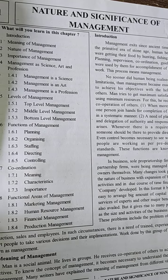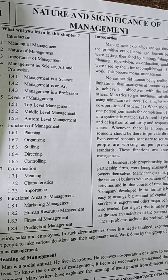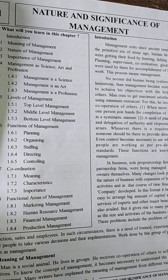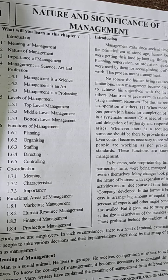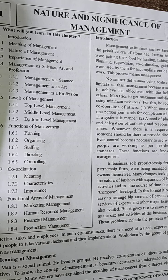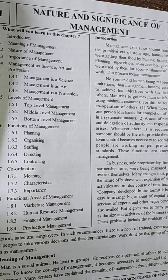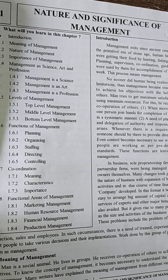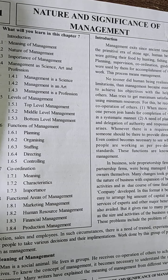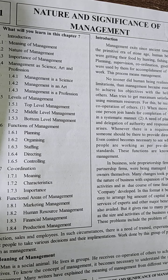But here we are going to study about business management. Last year I taught you there are various types of business forms — sole proprietorship, partnership firm, cooperative society, and joint stock company. In sole proprietorship, who manages the business? The owner. In partnership firm, who manages the business? All the partners.